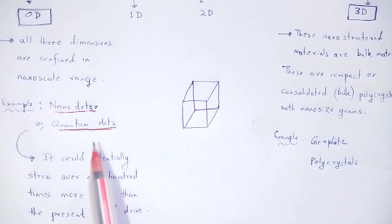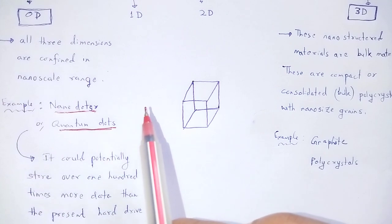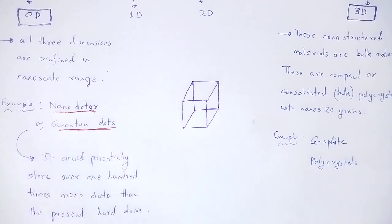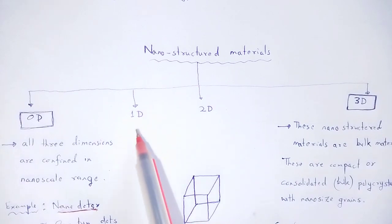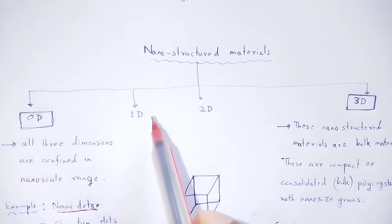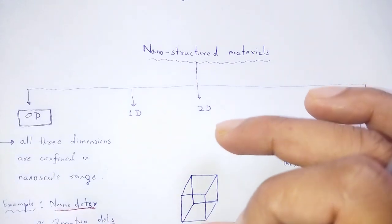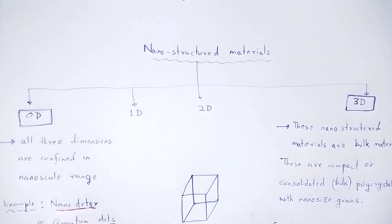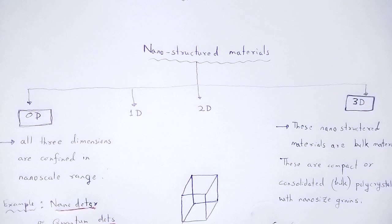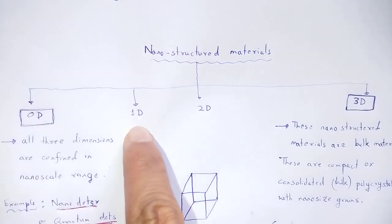For the classification of one-dimensional nanostructure material: starting from the bulk material, we have two dimensions in the nanoscale range, leaving one dimension not confined to the nanoscale.